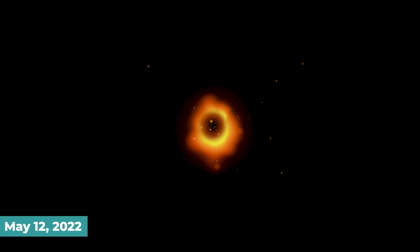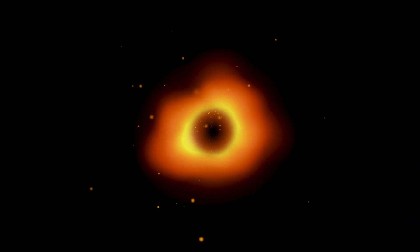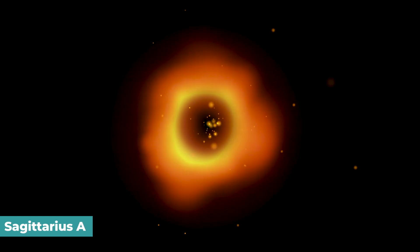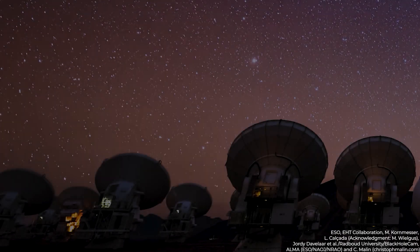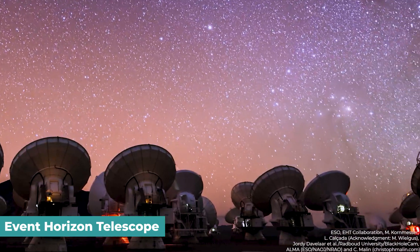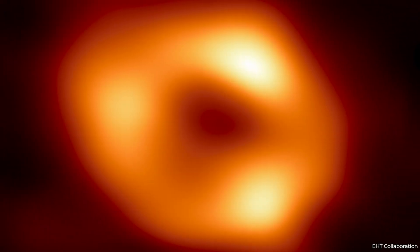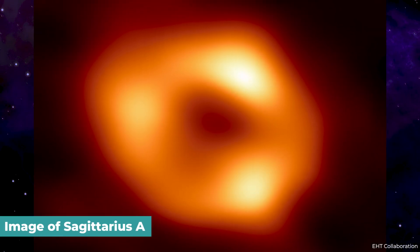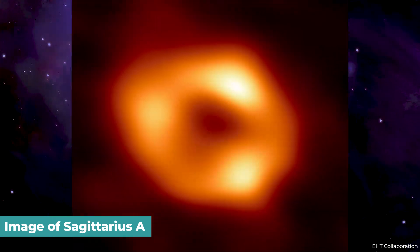Fast forward to May 12, 2022. Scientists gave us the first look at Sagittarius A in the form of a spectacular image. This image was taken by the Event Horizon Telescope at NASA. While the image may be blurry, it shows how amazing the black hole is at the center of our galaxy.